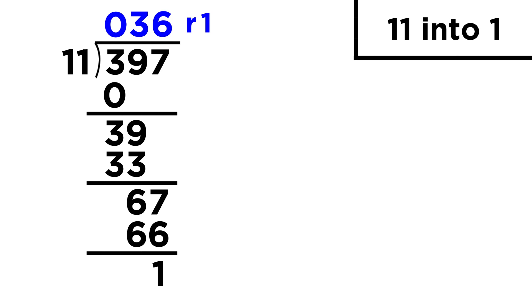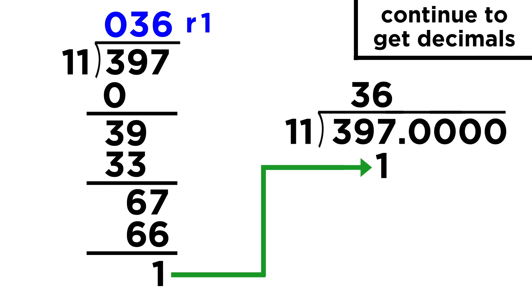If we don't like these remainders, we could keep going to get decimal places. Just put a decimal here and add a zero. Drop it down to get ten, eleven doesn't fit in ten, so we put a zero, multiply to get zero, and subtract to get ten.